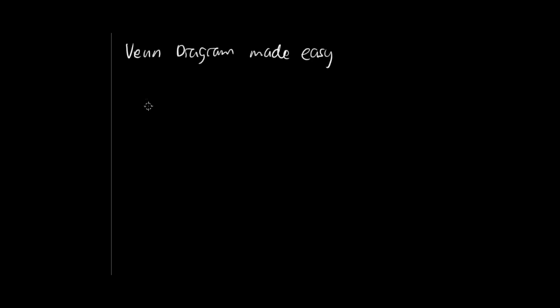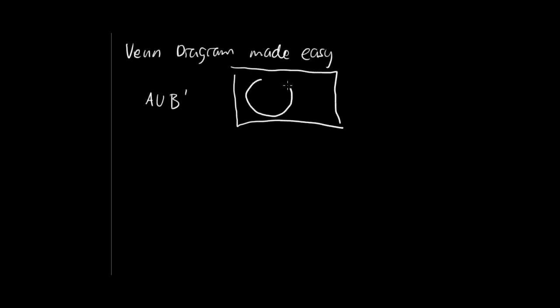So let's say I have the set A union B prime. This is a set that a lot of students have trouble with identifying on the Venn diagram. The idea is just like shading, but instead of shading, we're going to check. So when we have a union, we're going to take everything that has one check. And when we have an intersection, we're going to take only the thing that has two checks.